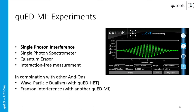In combination with other add-ons, some very interesting experiments include the Franson interference, where you would need another Michelson interferometer, and where you can show that in the coincidences you can observe interference at a spot where it would not be possible in the classical world.